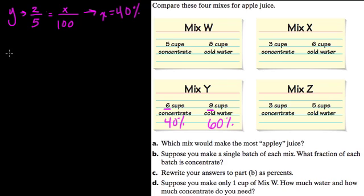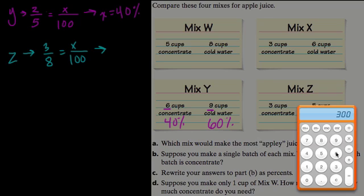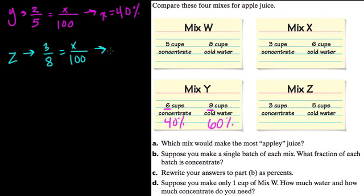What about mix Z? Well, that was 3 out of 8 concentrate. What will that be out of 100? Same strategy, multiply by 100. 100 times 3 is 300. And what is 300 divided by 8? 37 and a half. So it's 37 and a half percent in mix Z, which is lower than mix Y. And how much water will it be? Well, you subtract 37 and a half percent from 100. 100 minus 30 is 70, minus 7 is 63, minus 0.5 is 62.5% cold water. And you can see this confirms that mix Y is sweeter than mix Z. There's a higher percentage of concentrate.